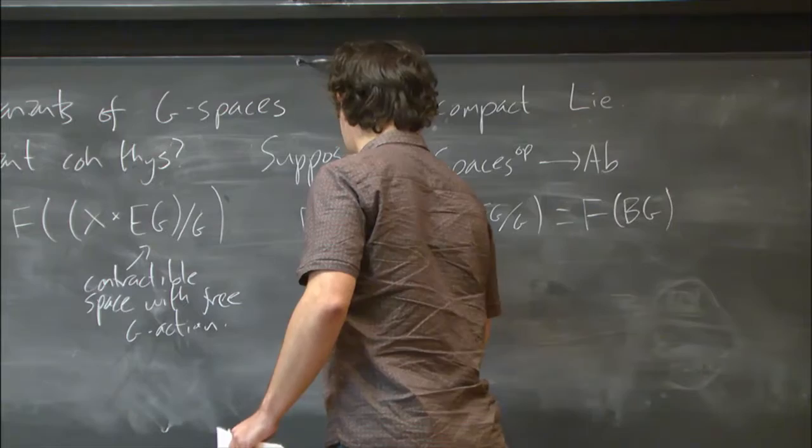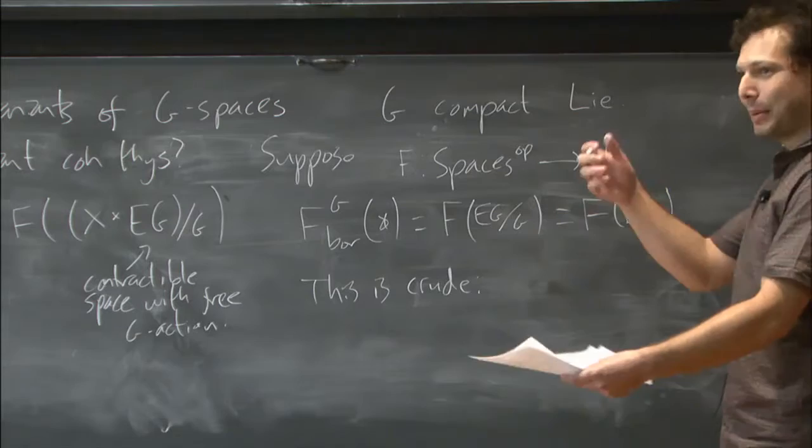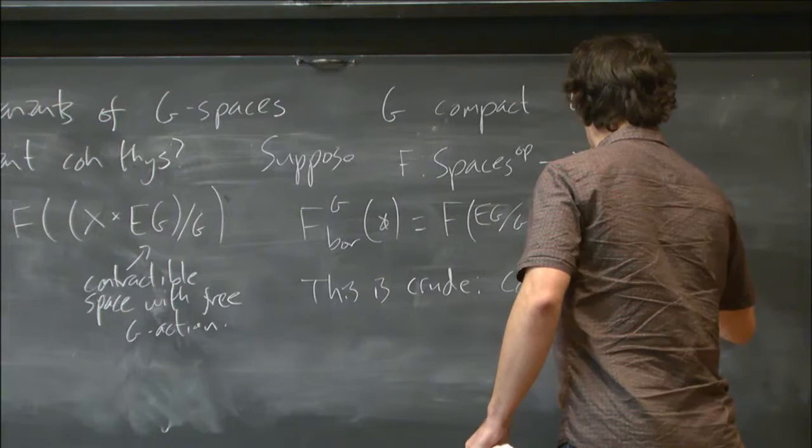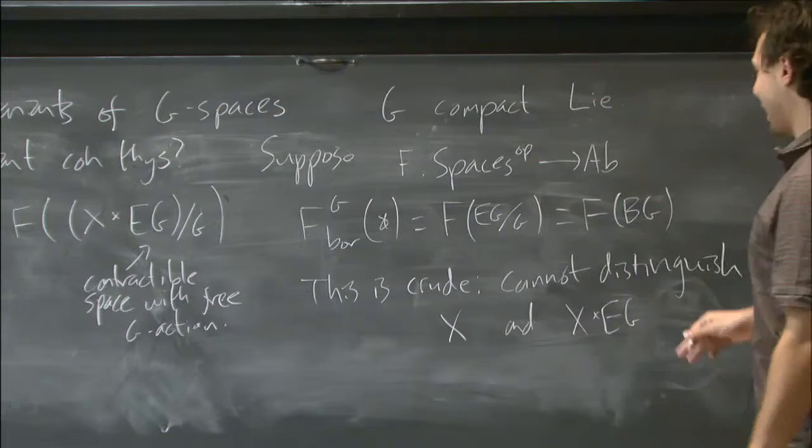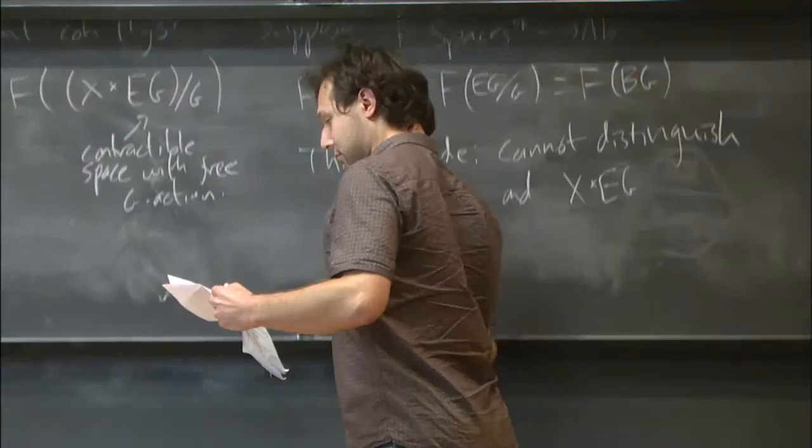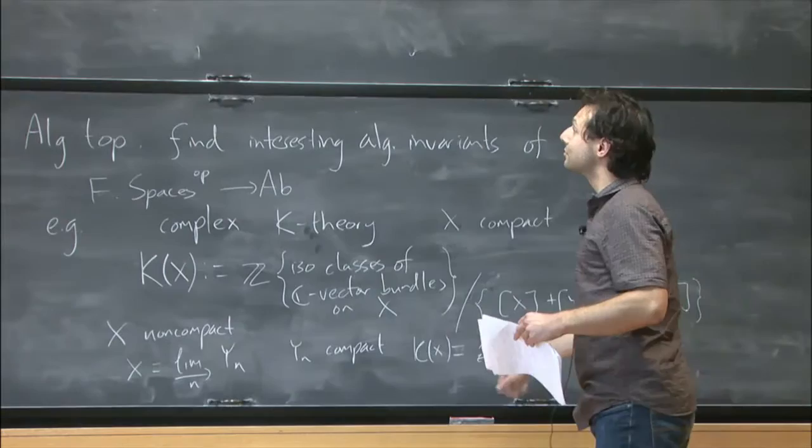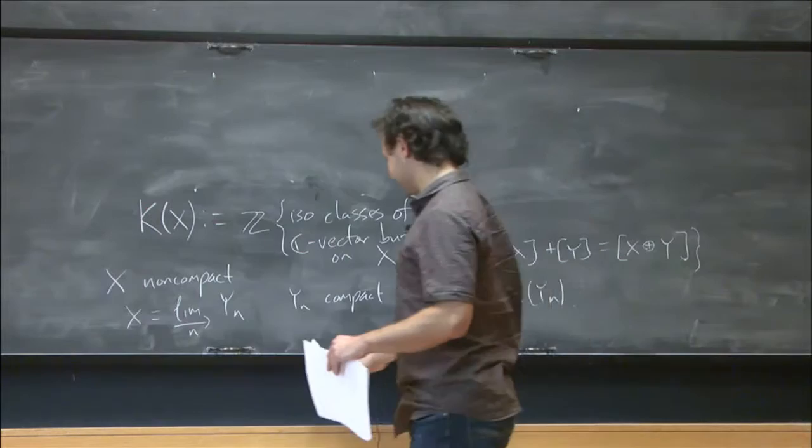Okay, so this is a kind of crude thing to do because it fails to distinguish between spaces which have a less free action and spaces which have a more free action. So if I take my G-space X and I free up the G-action by taking the product with EG, then these are the same from the point of view of my Borel equivariant cohomology theory. So can we do better? Well, in some cases, yes.